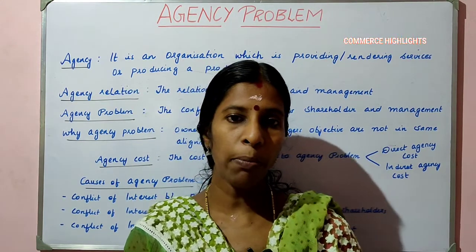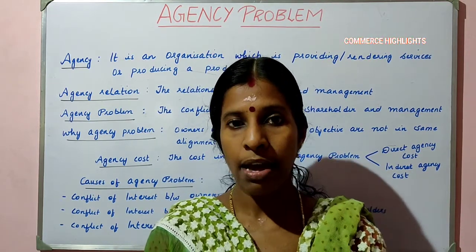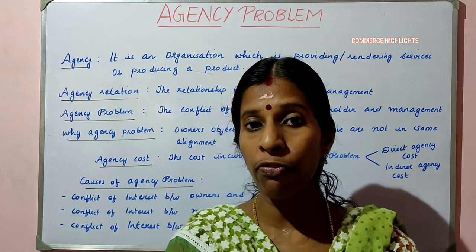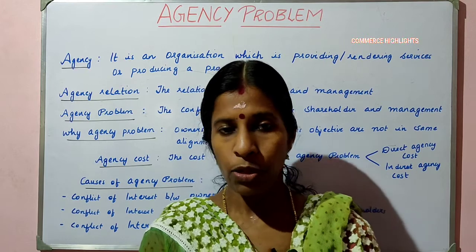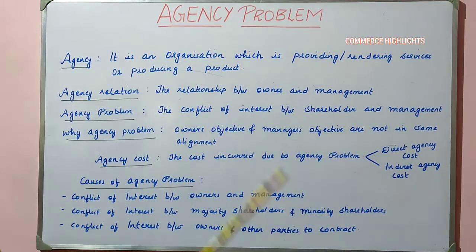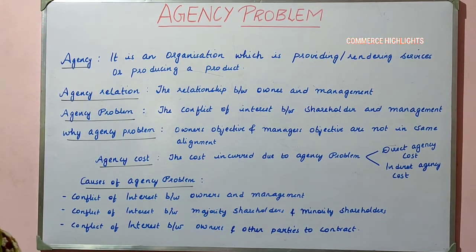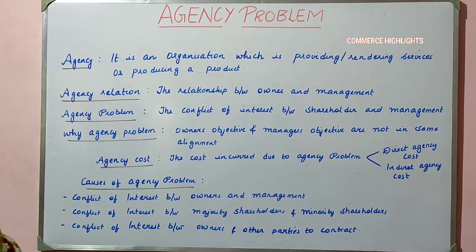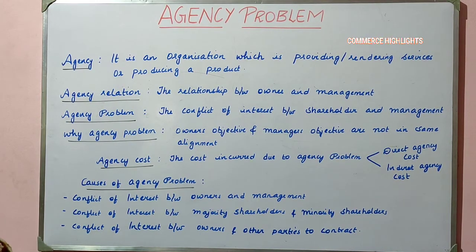Coming to agency problem, before discussing what agency problem is, the first thing we have to know is the meaning of agency. Only then the meaning of agency problem can be derived. Agency means any organization which produces goods or renders services is generally termed as an agency. It is the owner who is in charge of an agency.